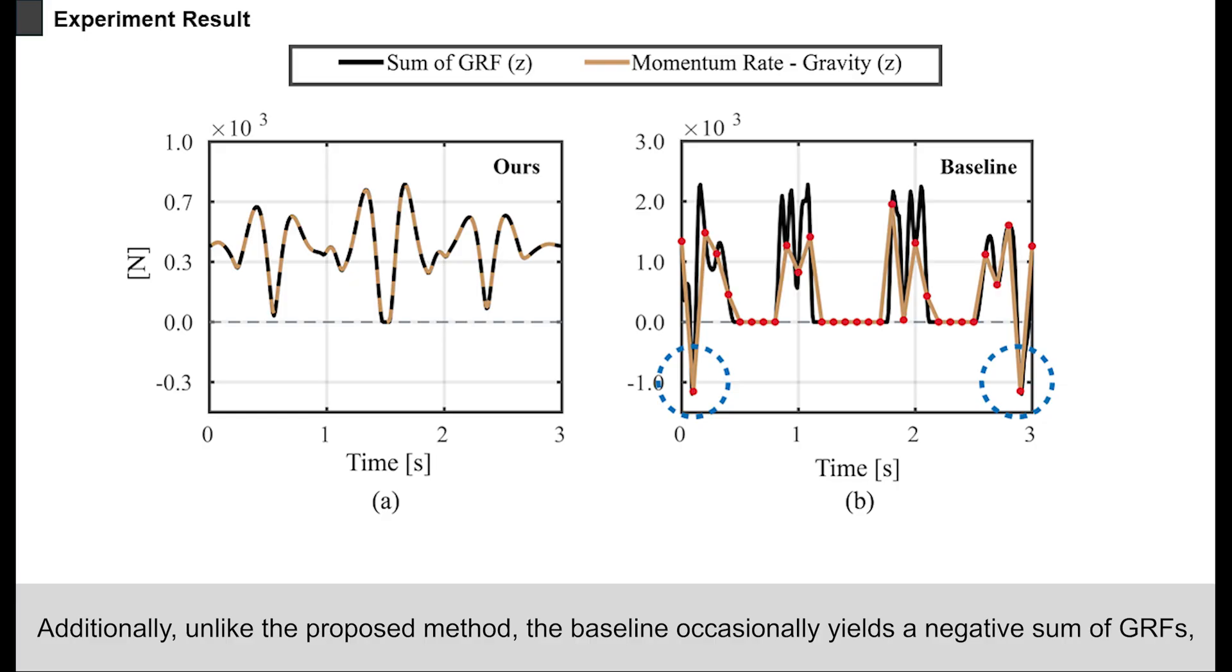Additionally, unlike the proposed method, the baseline occasionally yields a negative sum of GRFs, which indicates a violation of the friction cone constraints.